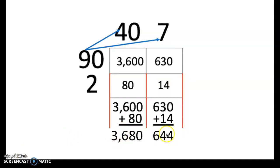My next step is I just simply add it all up. Zero plus zero is zero. Zero plus eight is eight. Six plus zero is six. Three plus zero is three. Three plus three. Our sum is 3680. Moving over here, I do zero plus four is four. Three plus one is four. And six plus zero is six.